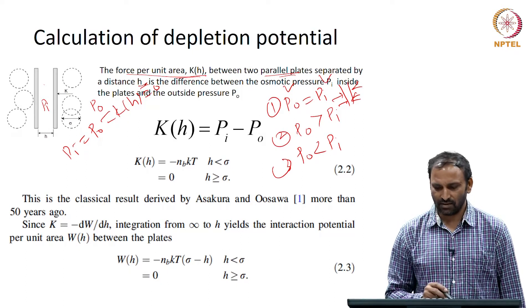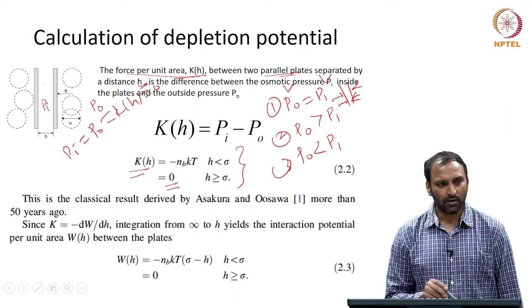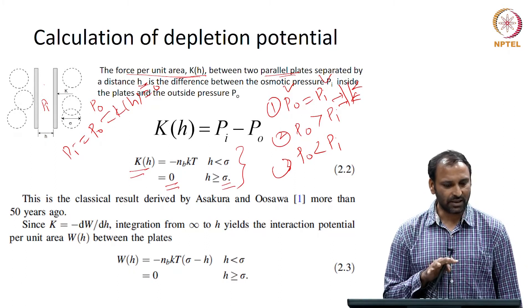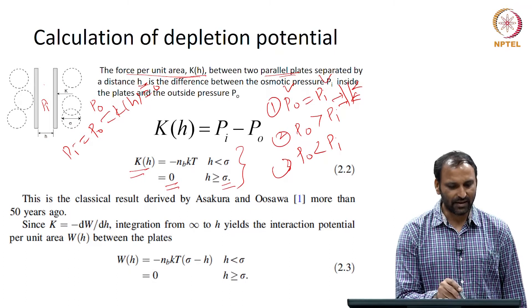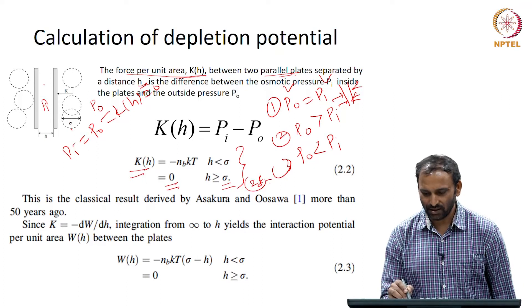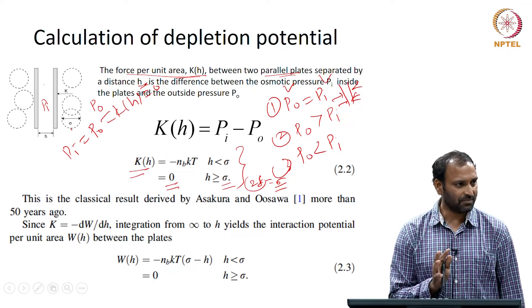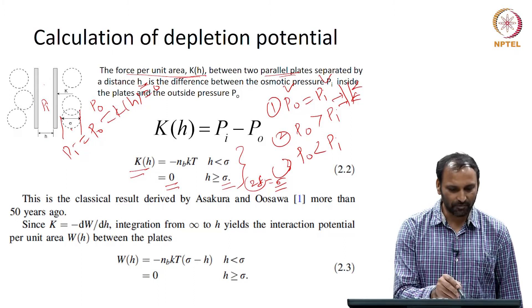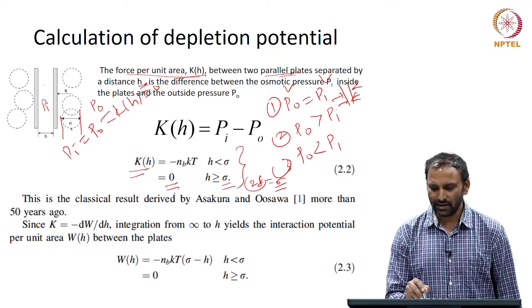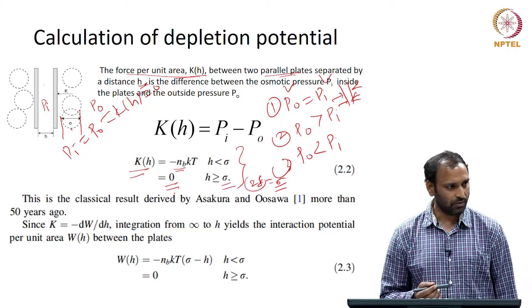Going back to what we wrote earlier, the depletion potential as a function of h is 0 if h is greater than or equal to sigma. When the distance of separation between the plates is greater than sigma — which corresponds to 2 times delta — the interaction is zero. For any distance less than sigma, K(h) is going to be minus nb times kbT.